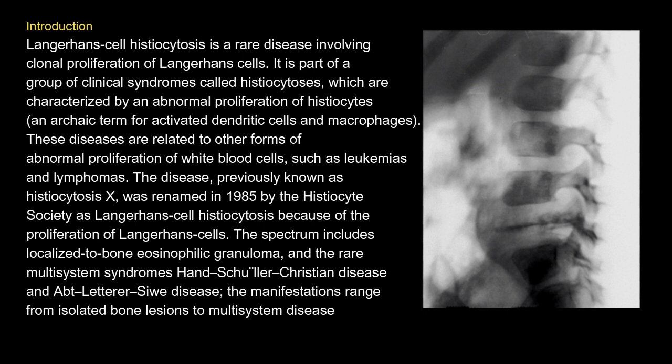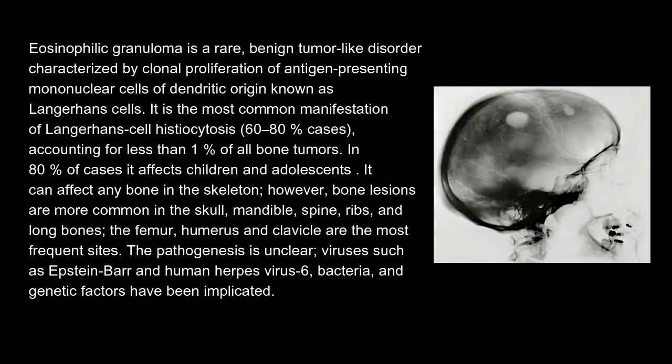The spectrum includes localized bone eosinophilic granuloma and the rare multi-system syndromes: Hand-Schüller-Christian disease and Abt-Letterer-Siwe disease. Manifestations range from isolated bone lesions to multi-system disease. Eosinophilic granuloma is a rare benign tumor-like disorder characterized by clonal proliferation of antigen-presenting mononuclear cells of dendritic origin known as Langerhans cells. It is the most common manifestation of Langerhans cell histiocytosis, accounting for 60 to 80 percent of cases and less than one percent of all bone tumors.